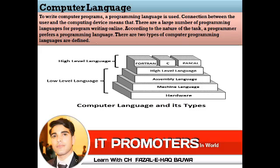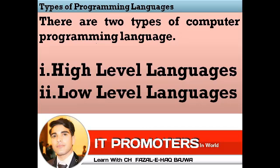There are two types of computer programming languages. The first one is high-level language and the second is low-level language.